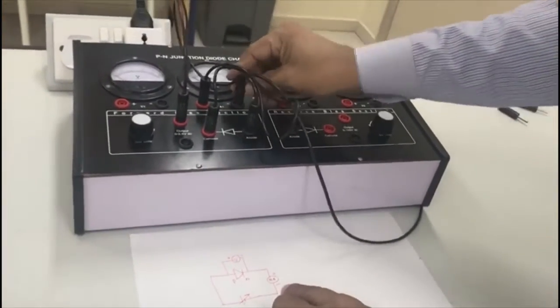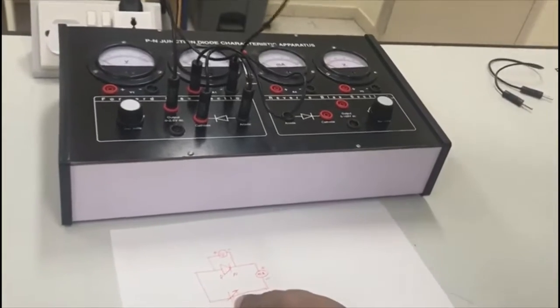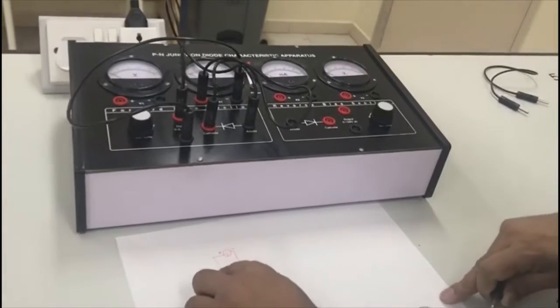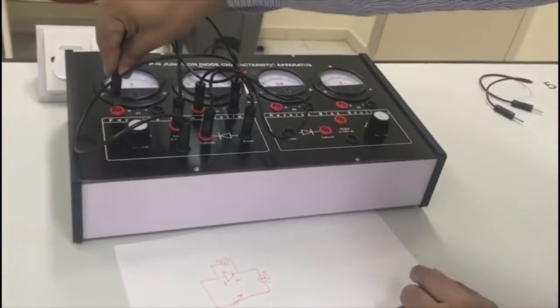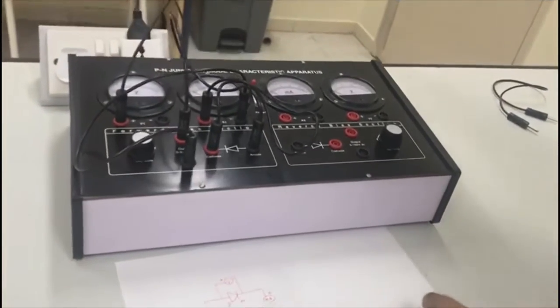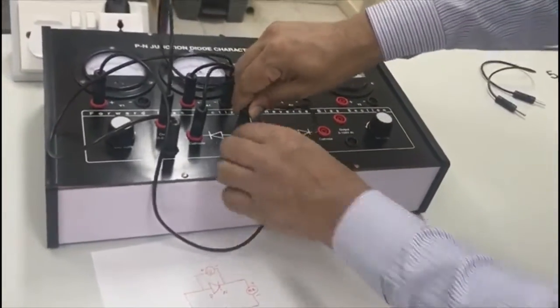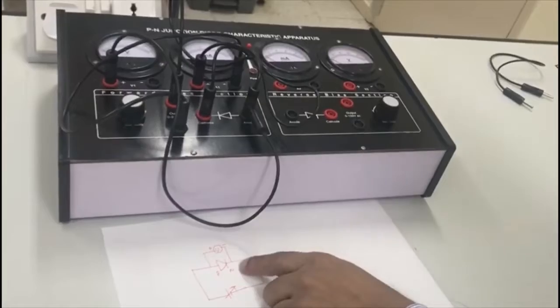Minus of the milliammeter goes back to the negative of the cell. Then voltmeter plus is connected to P. Voltmeter minus is connected to N.